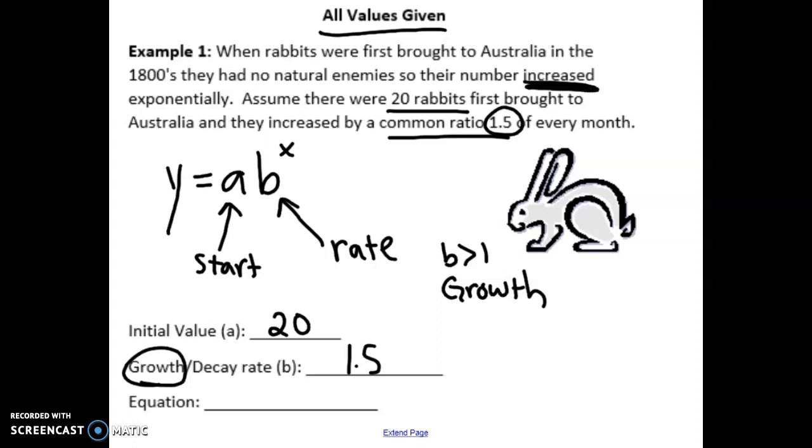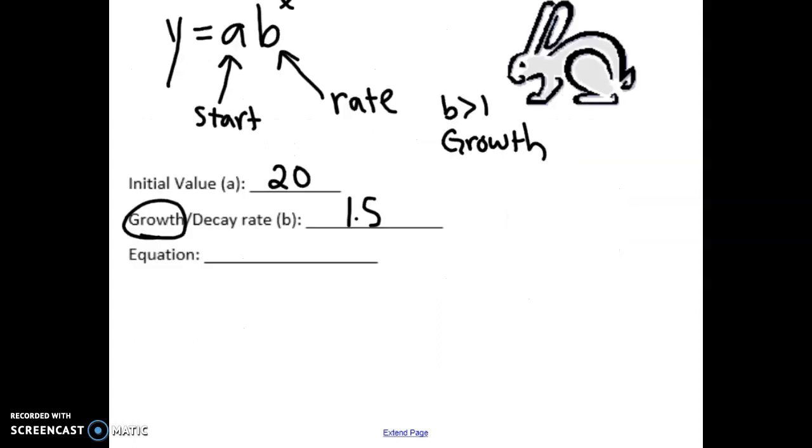So now we can write our equation. So our equation is y equals, we put the starting value first, 20 rabbits. In parentheses, we put the growth rate, and then raise to the x power. Don't forget that x power, guys, because this is an exponential function. It does need to have that exponent.